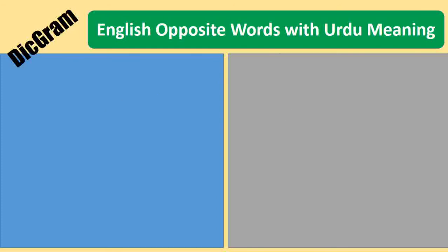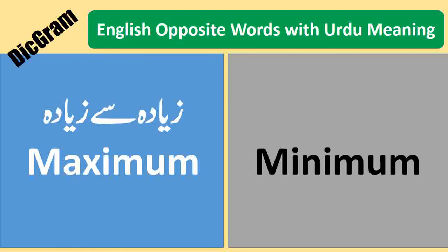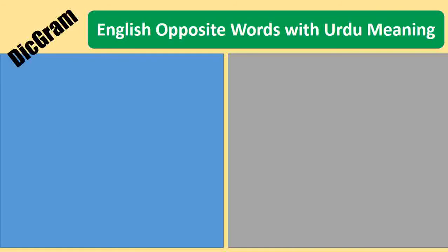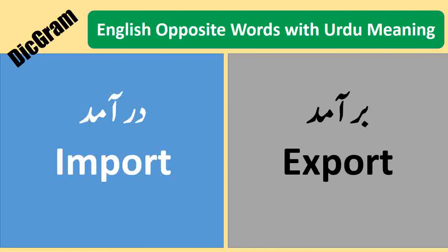Maximum — Zyadha Se Zyadha. Minimum — Kam Se Kam. Import — Daramid. Export — Baramid.